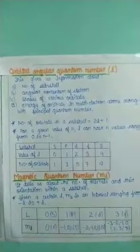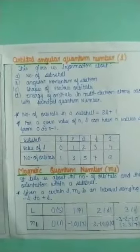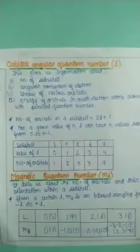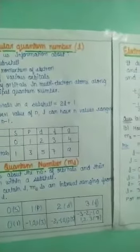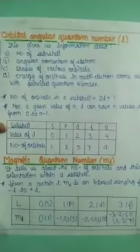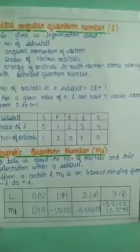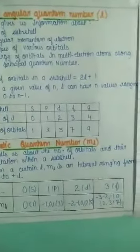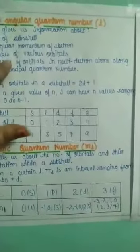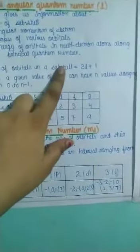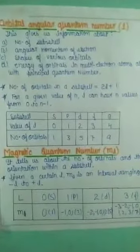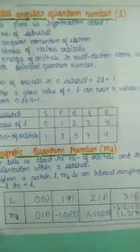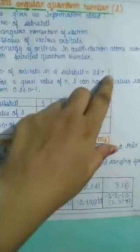Second is the orbital angular quantum number, which we denote by l. It tells us the number of subshells in a shell, the angular momentum of the electron, the shape of various orbitals, and the energy of orbitals in multi-electron atoms along with the principal quantum number.